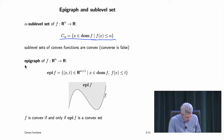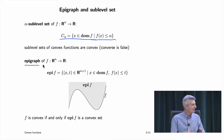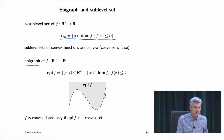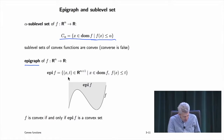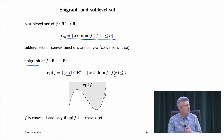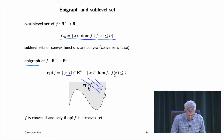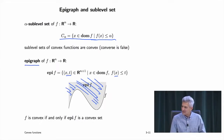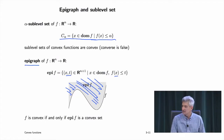The correct connection is through the epigraph. 'Epi' means above; the epigraph of f is the set of all pairs (x, t) where f(x) ≤ t — everything above the graph. A function f is convex if and only if its epigraph is a convex set. That's the real connection between convex functions and convex sets.